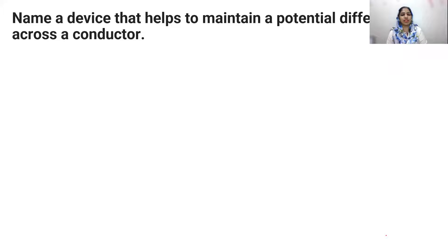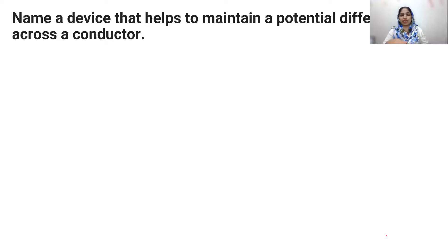In this video, we are doing a set of questions on page number 202. Name a device that helps to maintain a potential difference across a conductor.